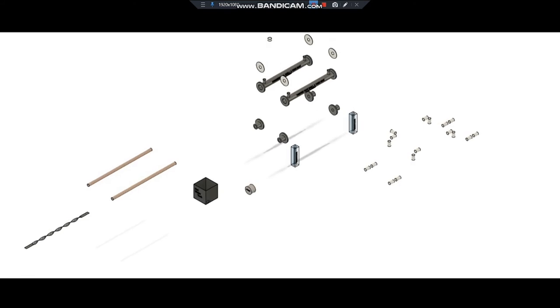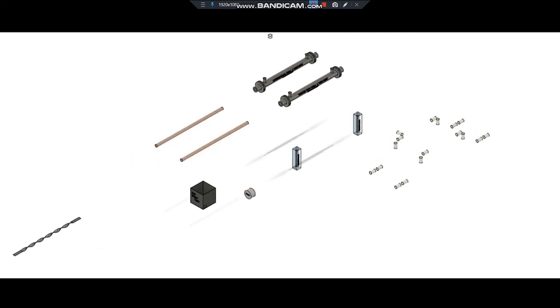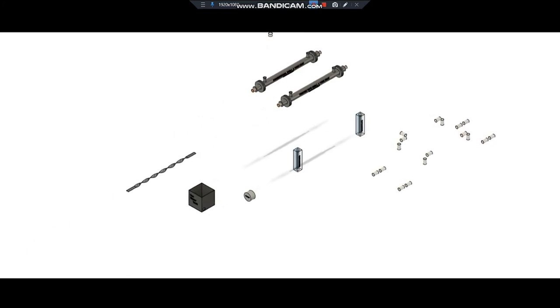The components which we used in this project are shown in this assembly video. First, the shell which is made of stainless steel, then connectors, then twisted tape, then tubes made of copper, twisted tape made of mild steel.